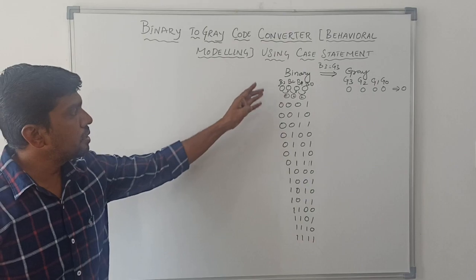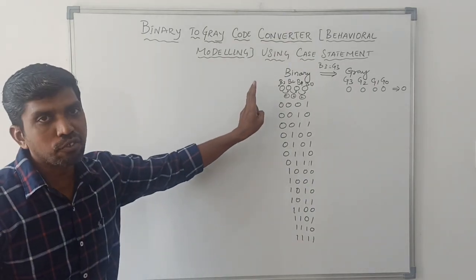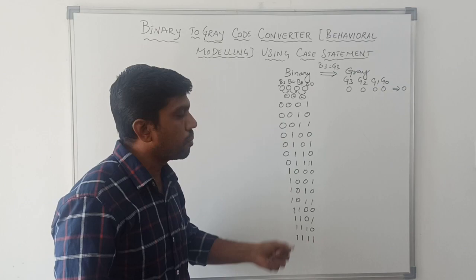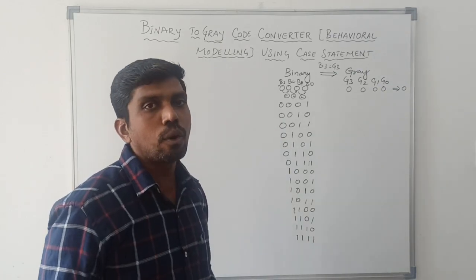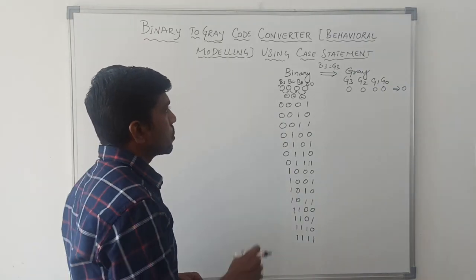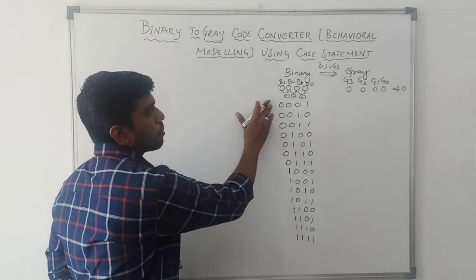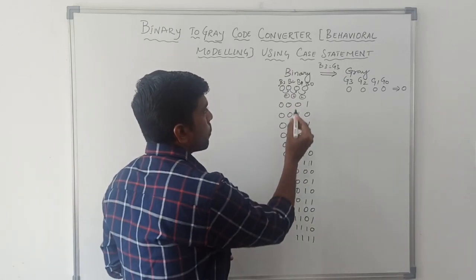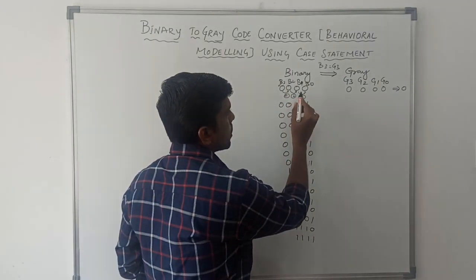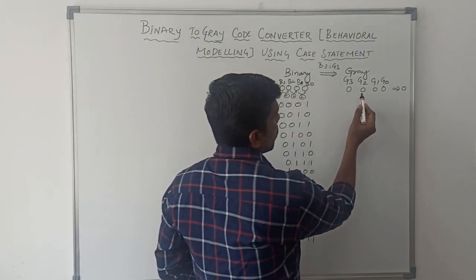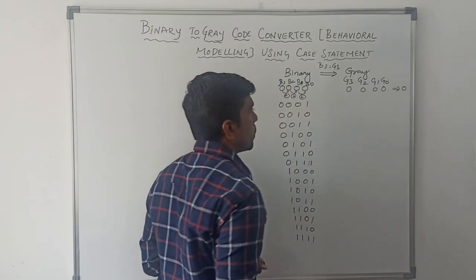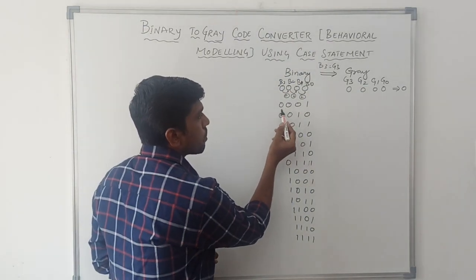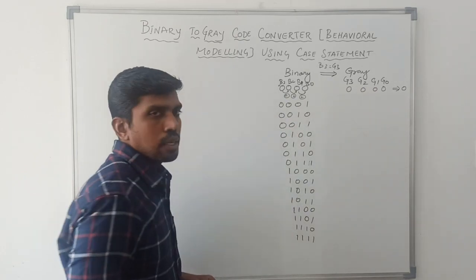First I write the binary number. Here I am taking 4 digits. With 4 digits we can get 16 combinations of binary input. This binary input value is converted into gray value. For the first value, all bits are set to 0. After conversion, the gray code value is also 0 — just applying the XOR operation on the bits.